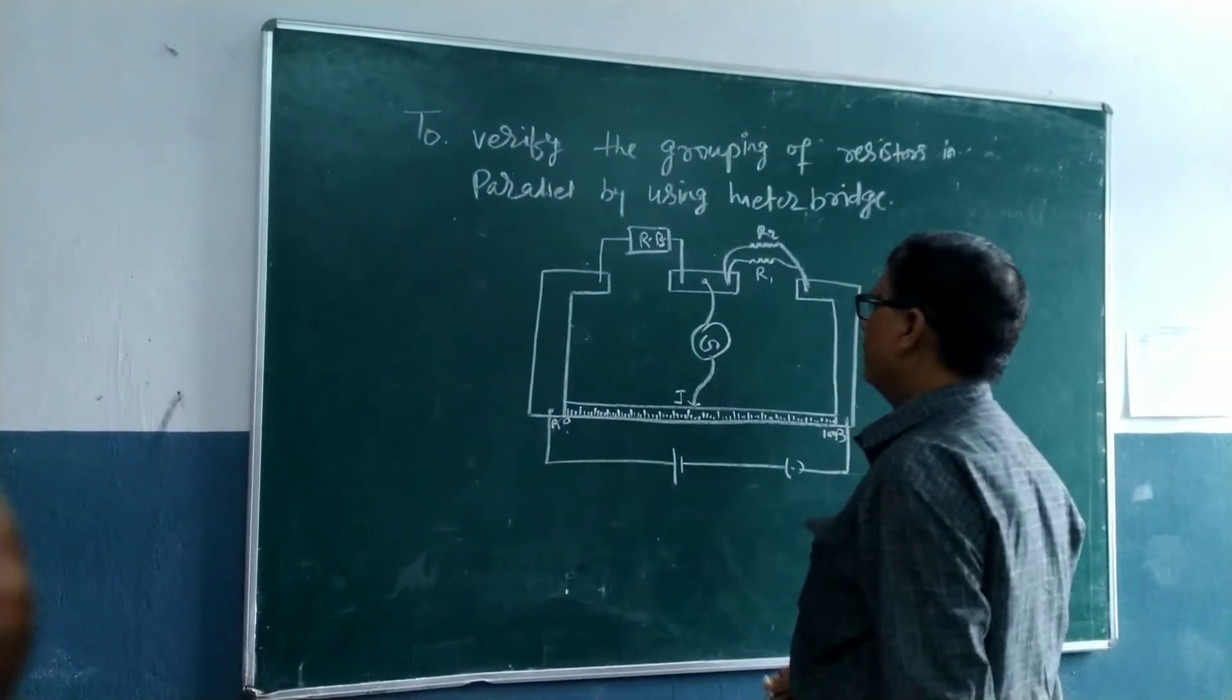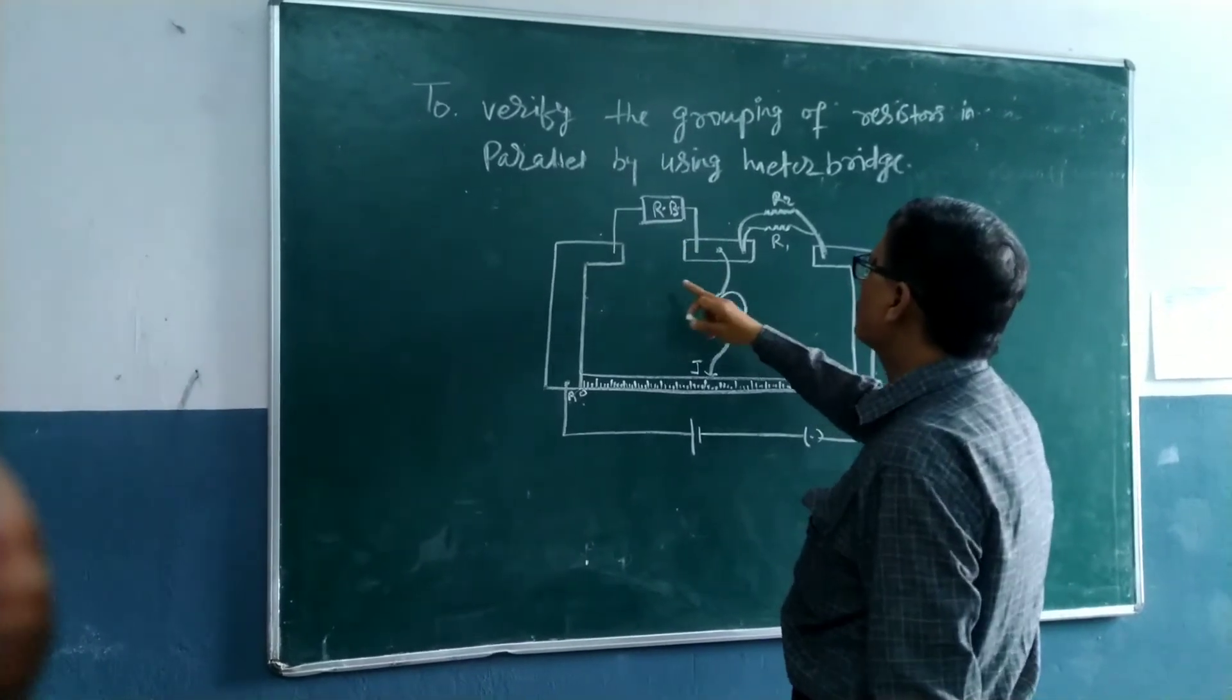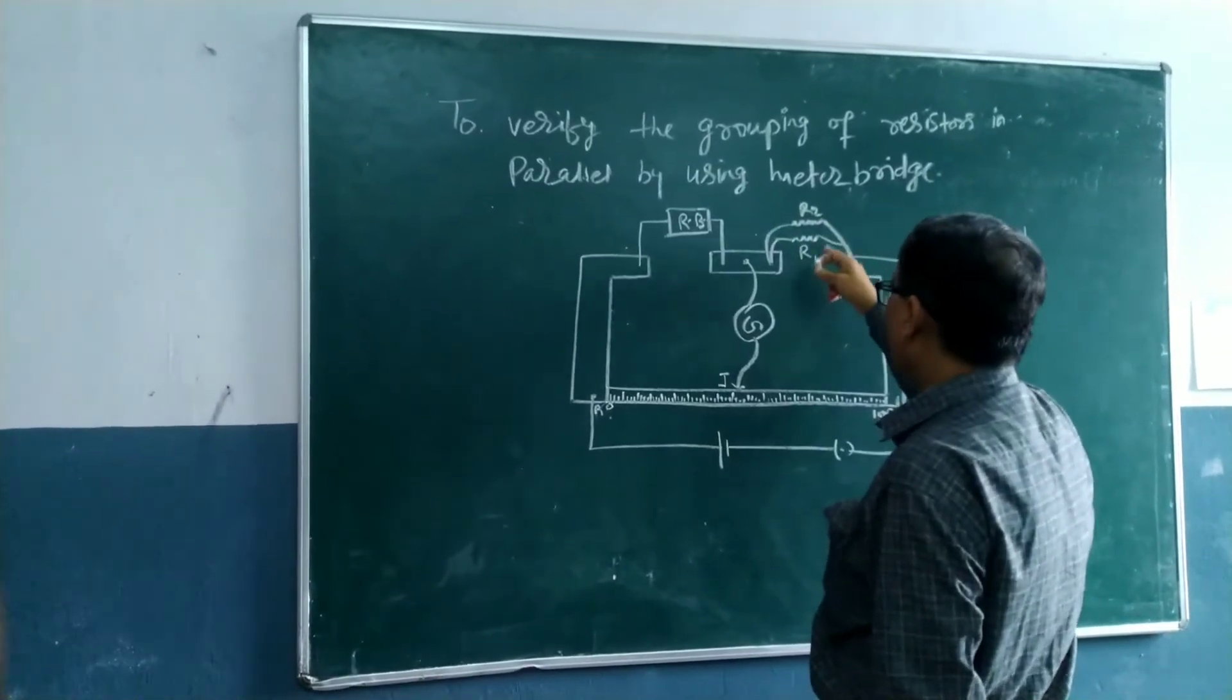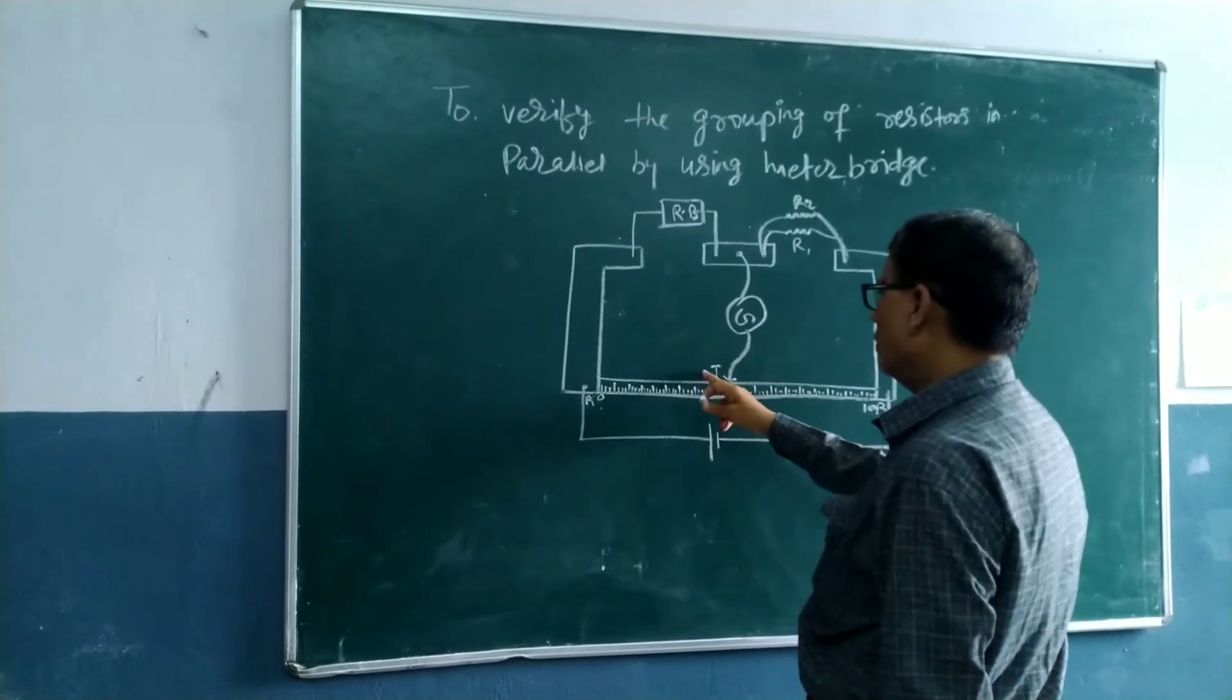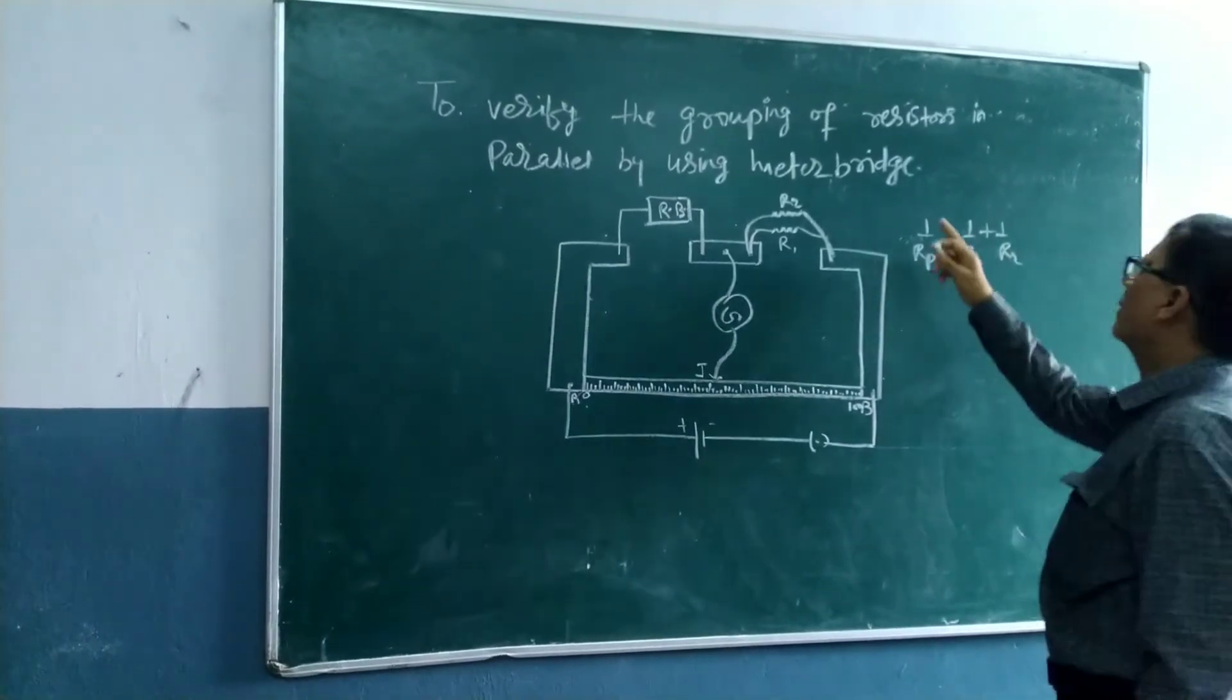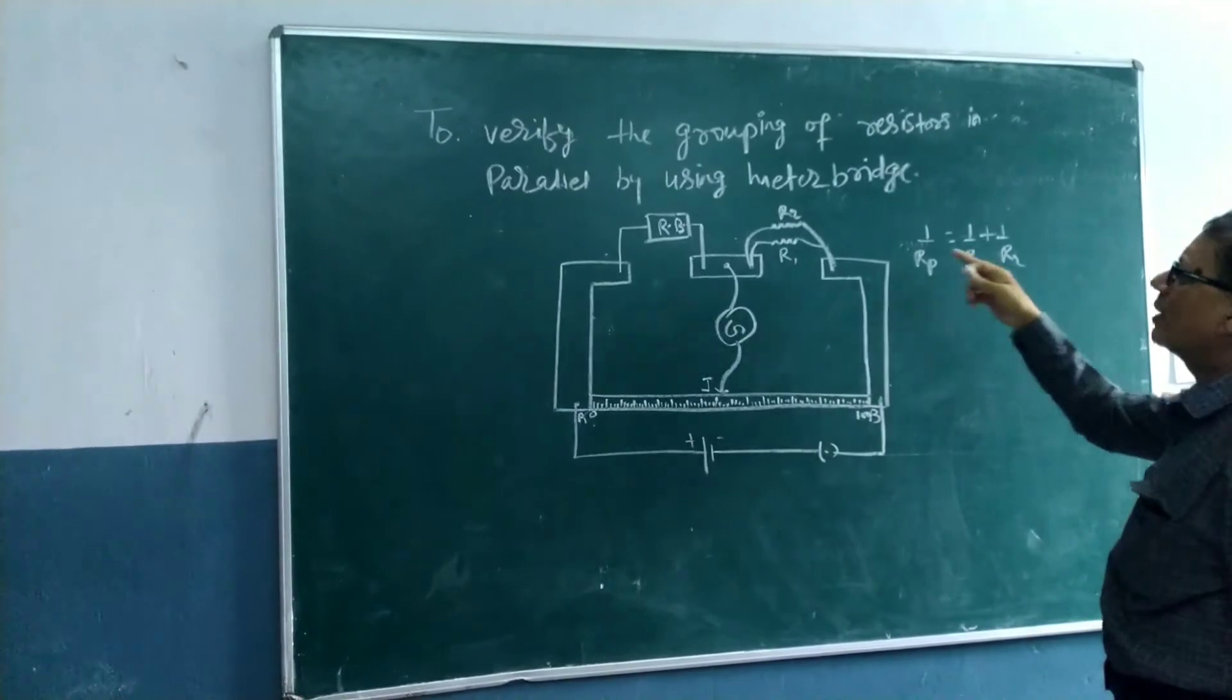Here, the diagram shows R for the resistance box, that is known resistance, and R1 and R2, two resistors grouped in parallel, G for galvanometer and J for jockey. As you know, 1/Rp equals 1/R1 plus 1/R2 for parallel grouping of resistors.